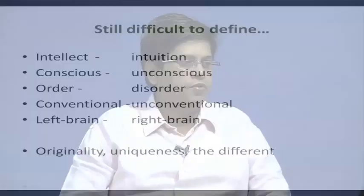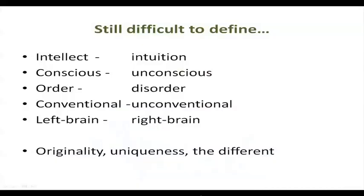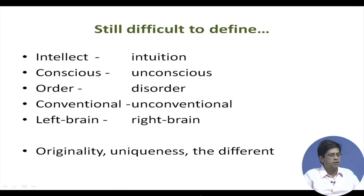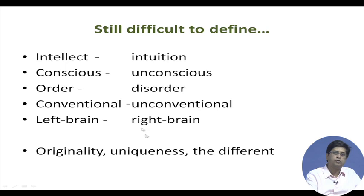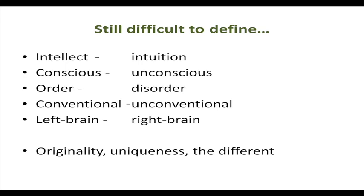Creativity is still difficult to define. The debate involves: intellect versus intuition, conscious versus unconscious, order versus disorder, conventional versus unconventional, left brain versus right brain, originality, uniqueness, and difference. A lot of things go into this debate about what is creative and what is not creative — and in certain cases the attributes cannot be very clearly articulated. Some might say disorder is creative because it leads to divergent thinking, while others say order is very significant to creativity as well.